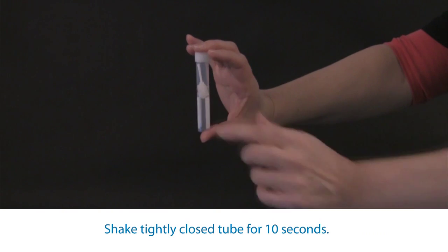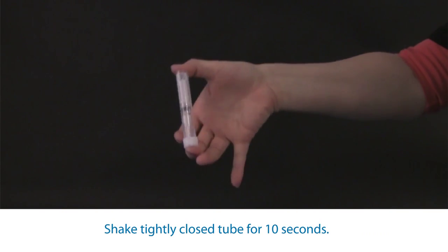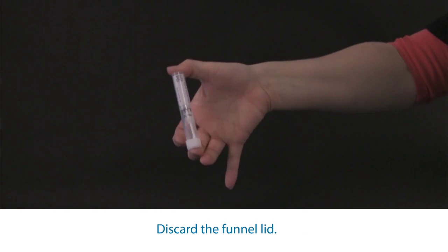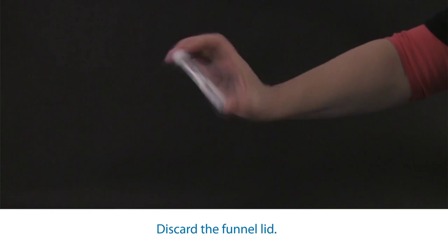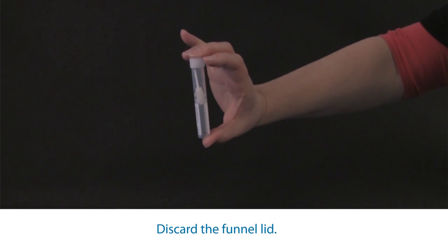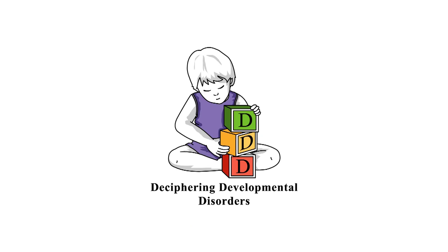Shake the tightly closed tube for 5 to 10 seconds until the saliva and liquid are mixed. Place the closed tube into a specimen bag with absorbent paper and seal the bag. Place the bagged sample or samples into the pre-addressed free post padded envelope and put it in the post.